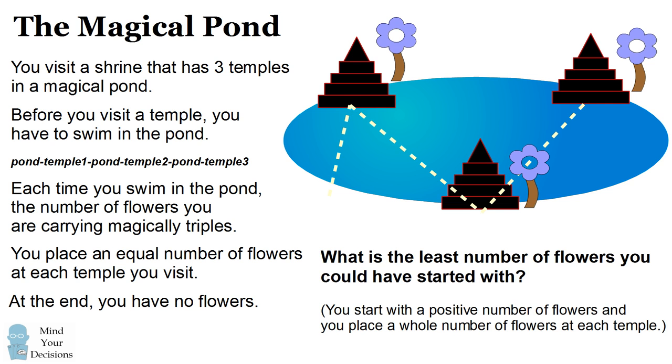To be specific, you start with a positive number of flowers, and you place a whole number of flowers at each temple. Can you figure it out? Give this problem a try, and when you're ready, keep watching the video for the solution.